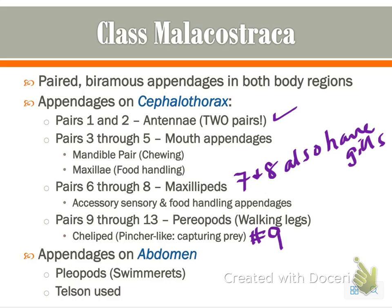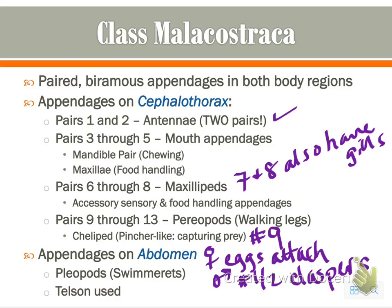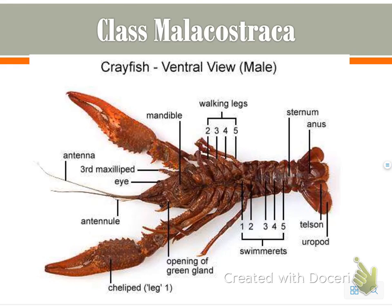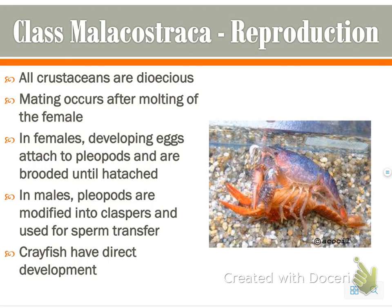It's important to note that with swimmerettes, for females, the eggs attach to the swimmerettes. For males, swimmerettes one and two are modified into claspers to help clasp the female during mating. Here's a view of the crayfish — something you will be dissecting — so take note now, and we'll go over this in much more detail in class. All crustaceans are dioecious. Mating occurs after the female molts. In females, eggs attach to those pleopods and are brooded until they hatch. In males, the swimmerettes are modified into claspers.